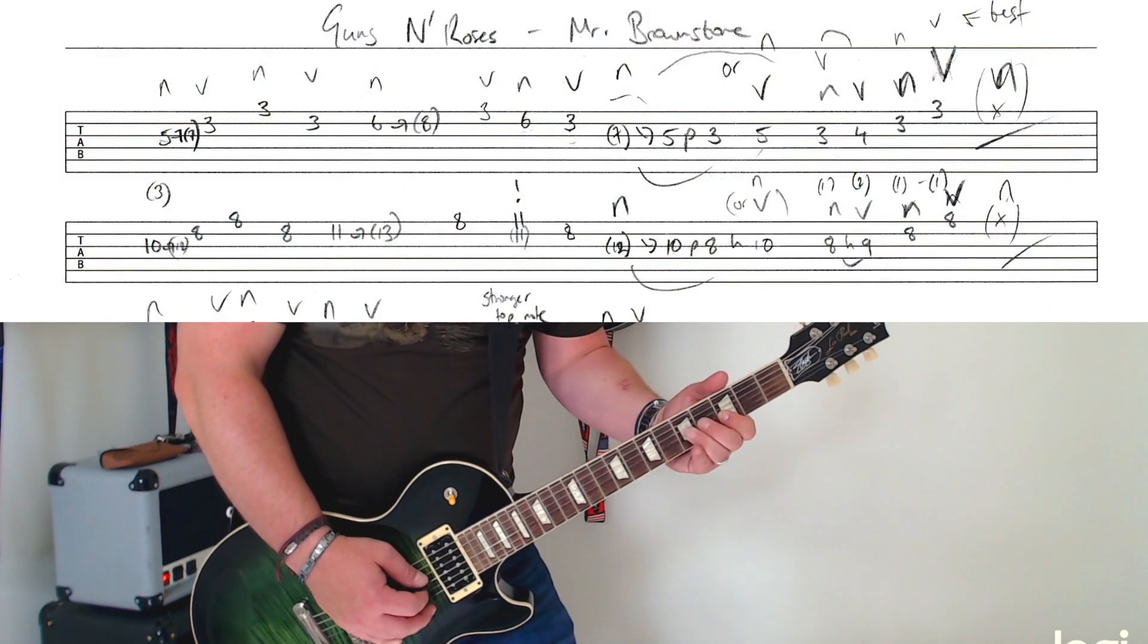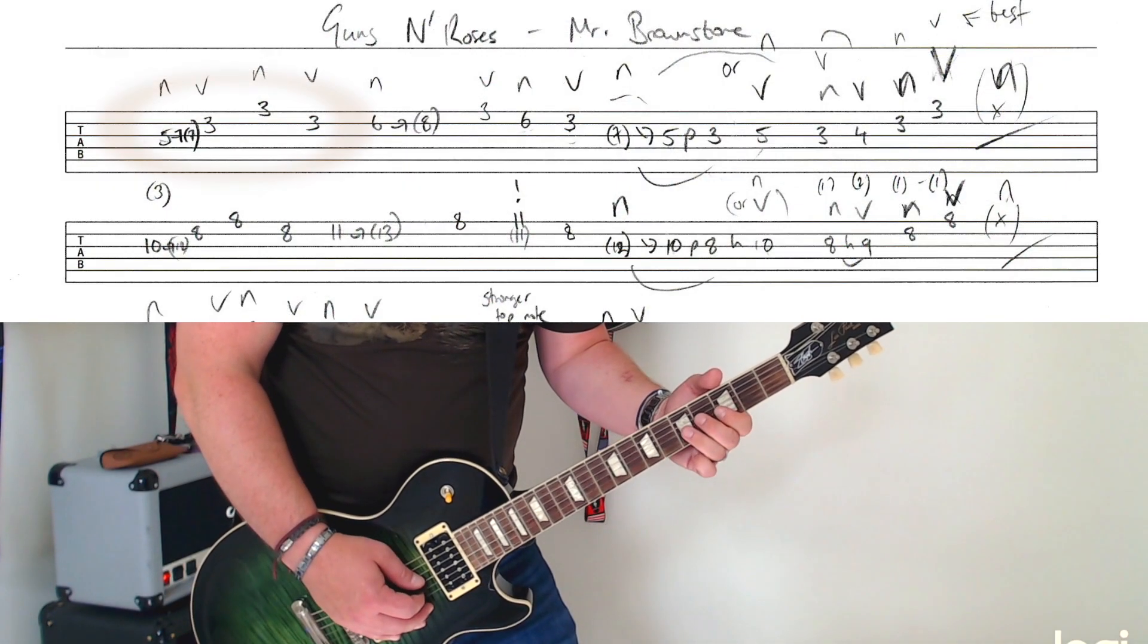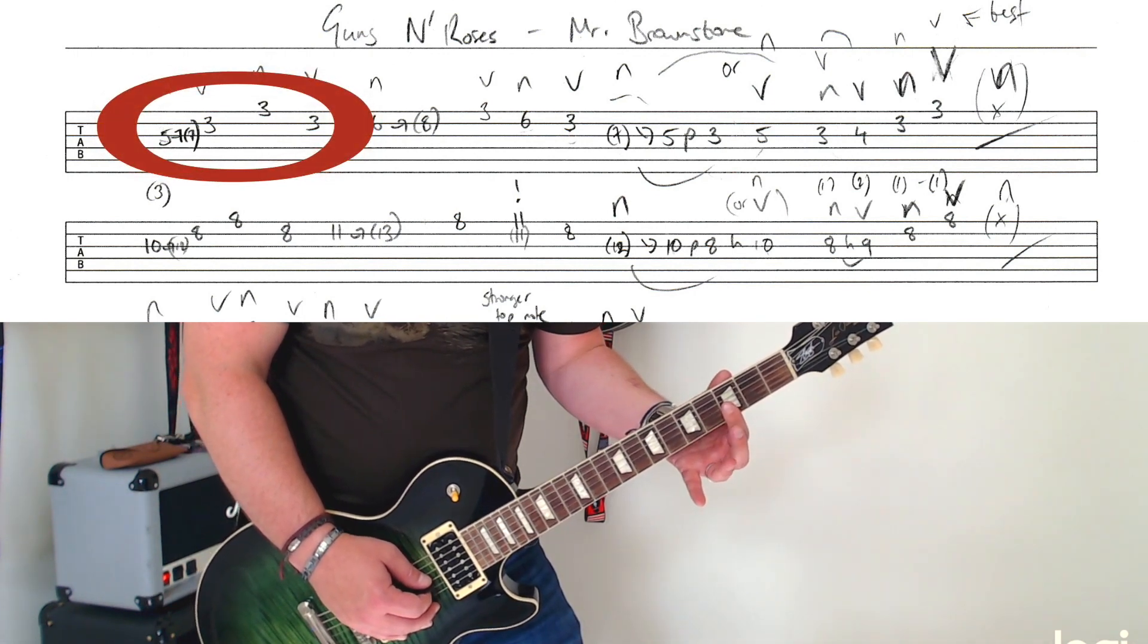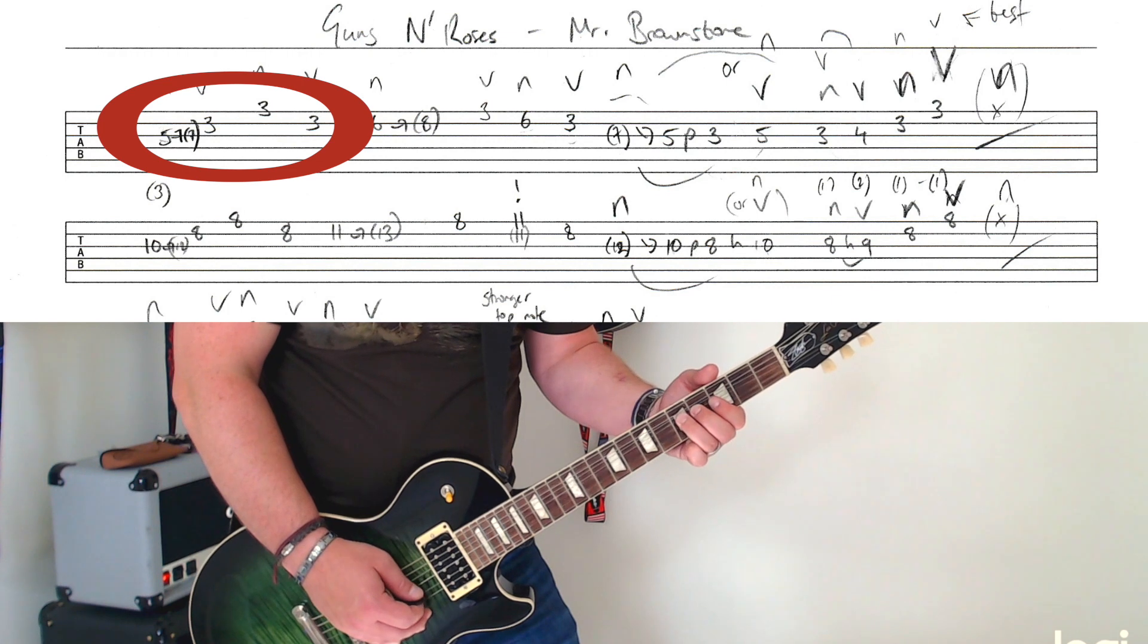This is how you really play it, nice and easy, with the right picking pattern as well, which is very important. Drop down to the 3rd fret. And take this 5th fret here, whilst you're keeping your first fingers across these 3rd frets here. Bend it up for the 7th.